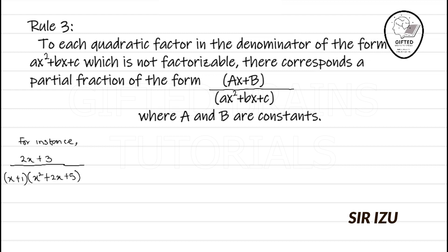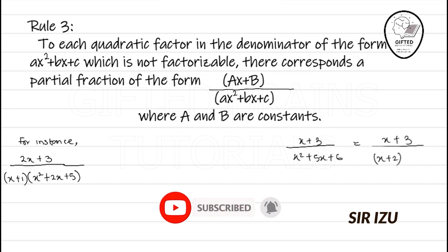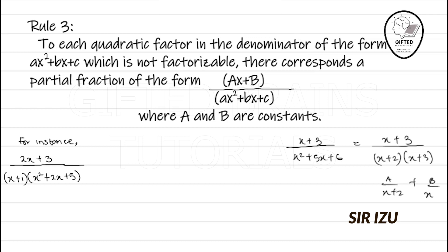Let me explain what this rule is trying to say. If we have a partial fraction like (x + 3) over (x² + 5x + 6), we factorize the denominator to get (x + 2)(x + 3). Then we write it as A over (x + 2) plus B over (x + 3). That's because this denominator is factorizable.